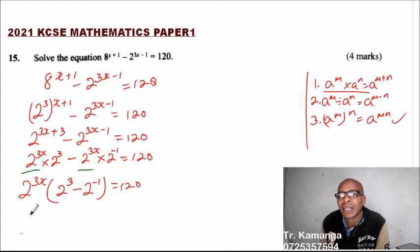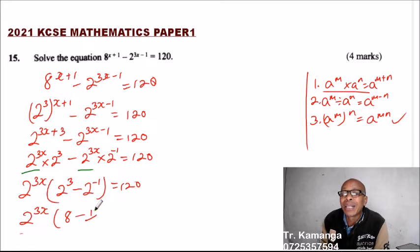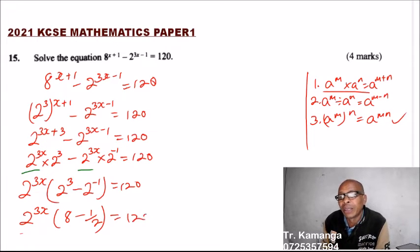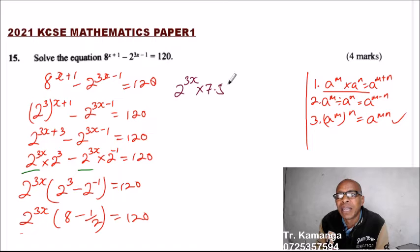Inside the bracket we have 8 minus 2^(-1), and 2^(-1) is the same as one half. So 8 minus one half equals 7.5. This gives us 2^(3x) multiplied by 7.5 equals 120.